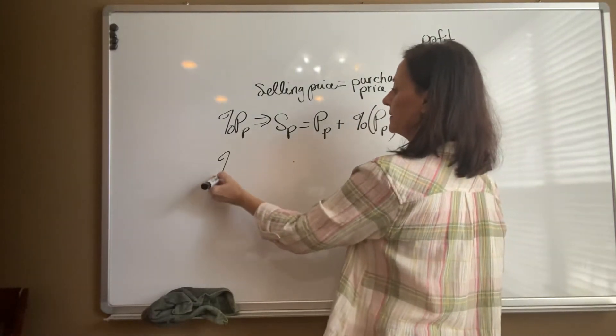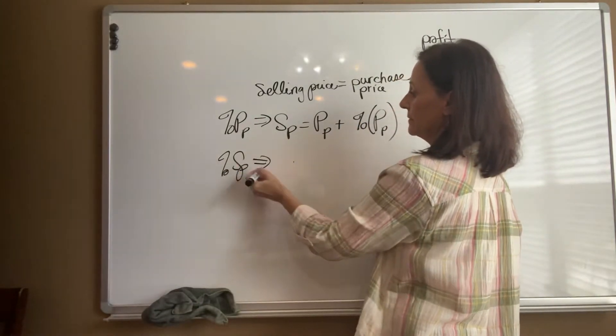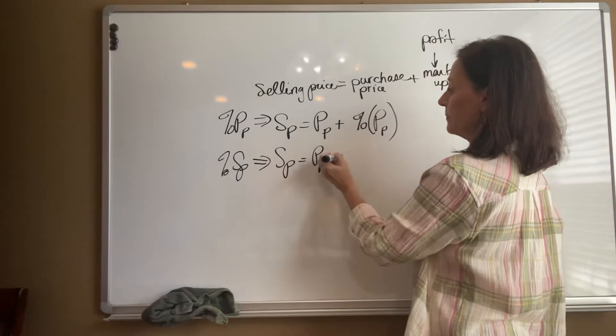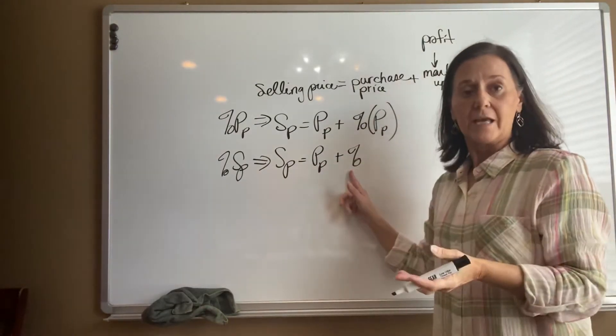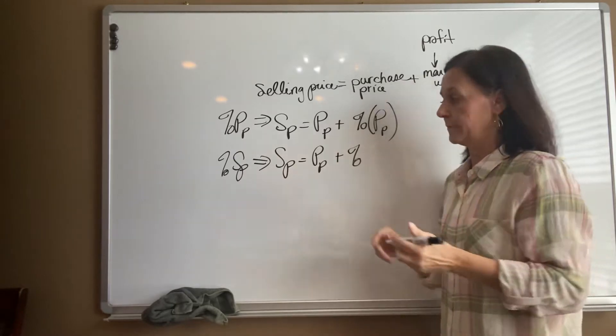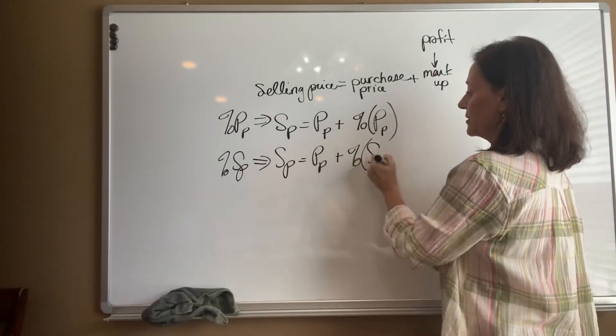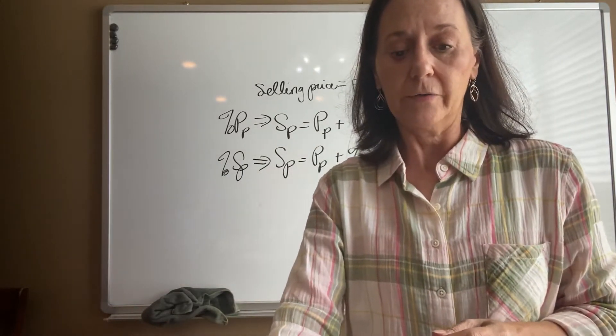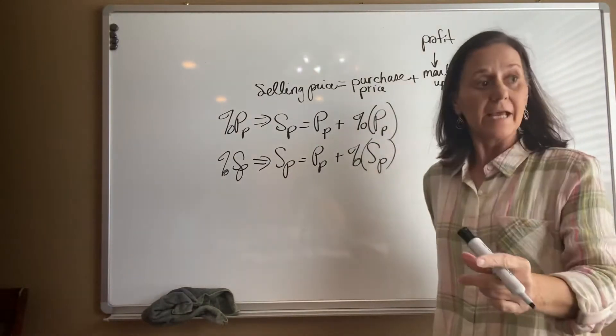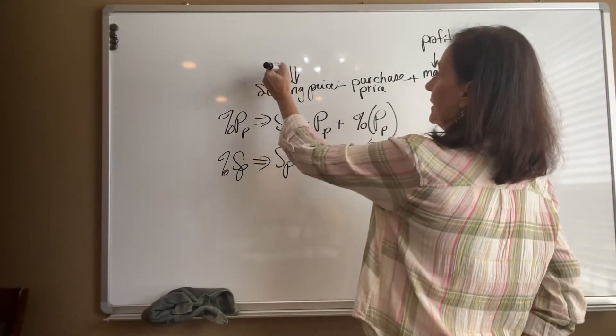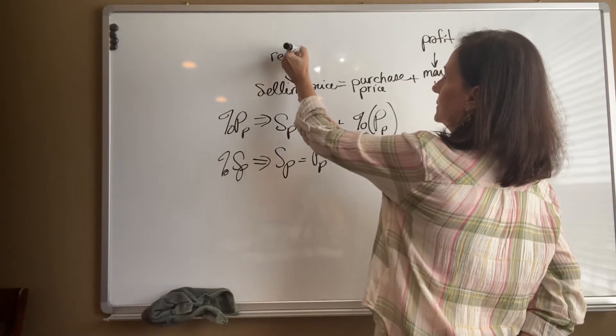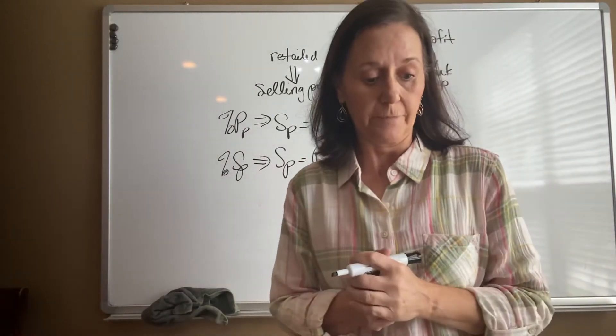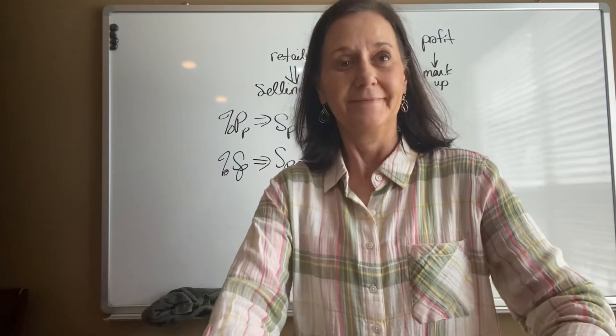If it is a percent of your sales price, then your formula will look like your sales price equals your purchase price plus whatever that percent—when we do the percent, we're writing it as a decimal—times whatever your sales price is. And when they use the word retail, retail is another word for sales price. That means what they sold it for. So those words are interchangeable.